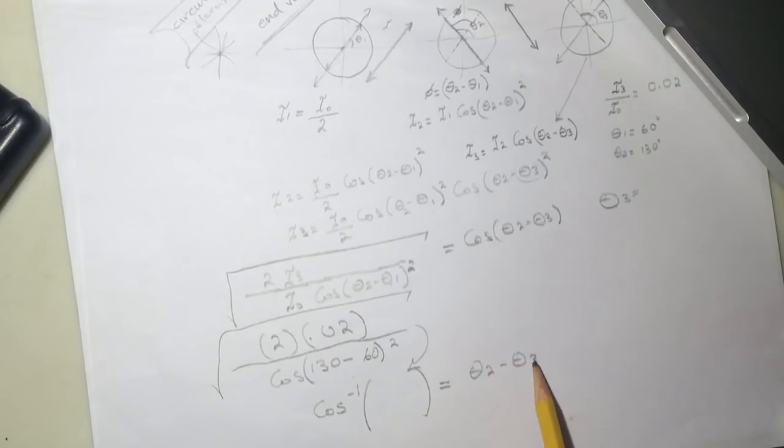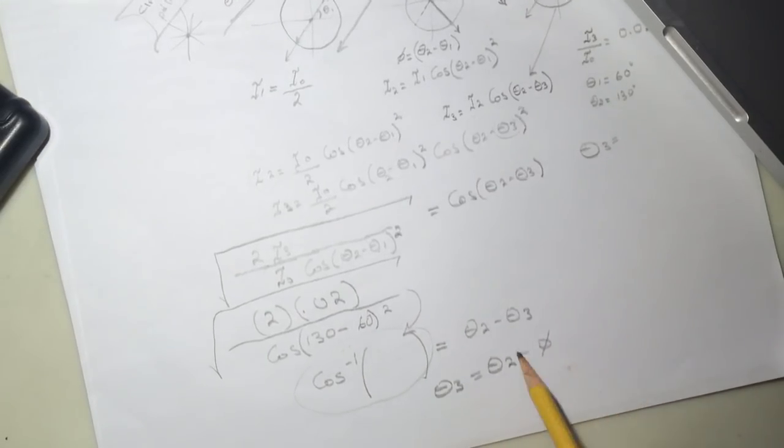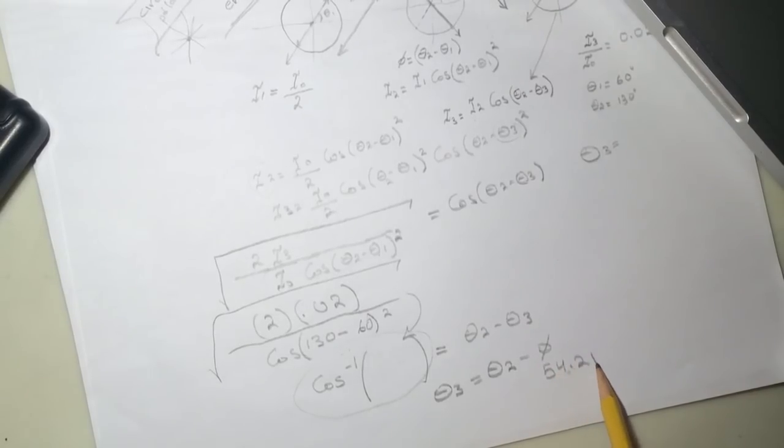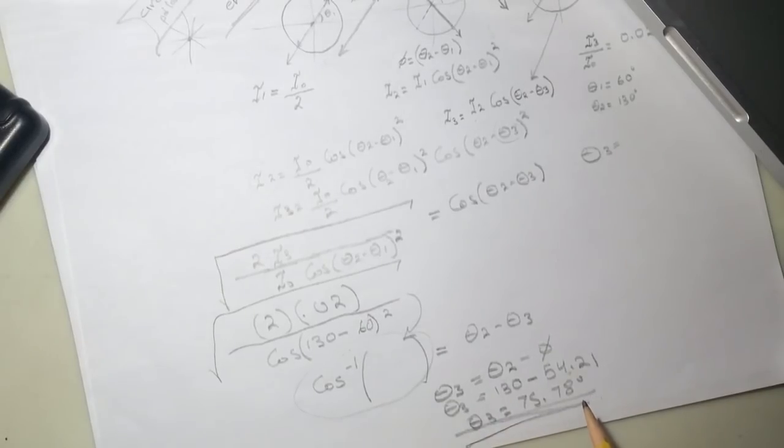So then take theta 3 to the other side. So theta 2, and I'll call this angle here is phi minus phi. So my phi in this problem was 54.21 then minus 130. My theta 3 was 75.78 degrees. All right, I hope this helped and good luck.